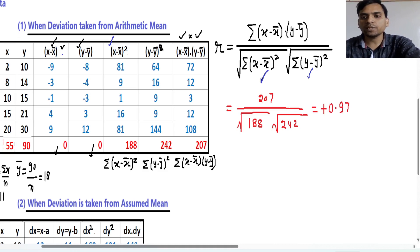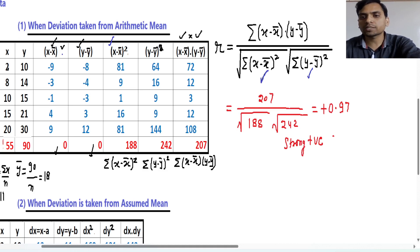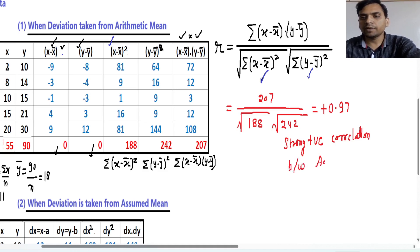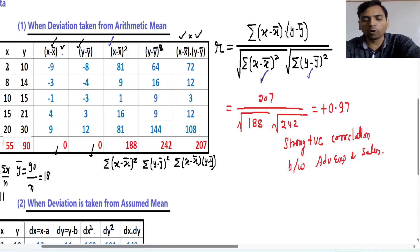Due to the positive sign, there is a positive correlation, and because this value is close to 1 there is a strong relationship. So we can say there is a strong positive correlation between advertisement expenditure and sales. This means as you increase advertisement expenditure, sales will also increase.